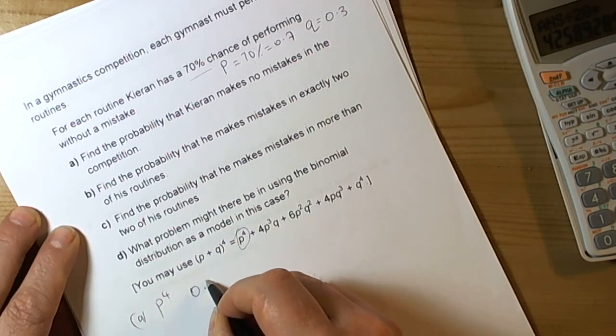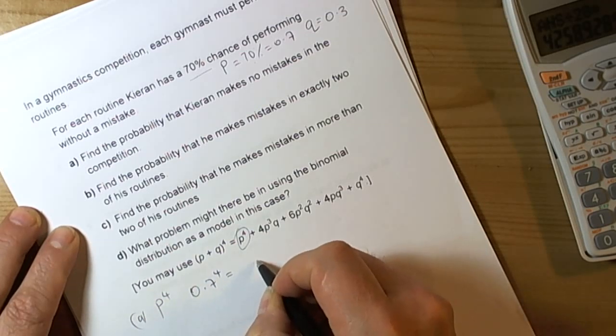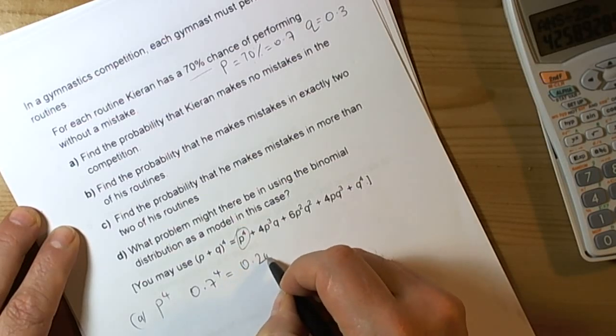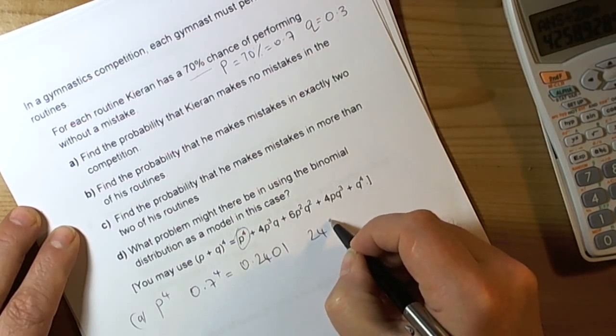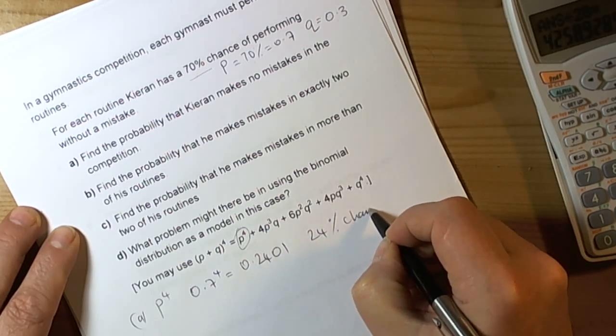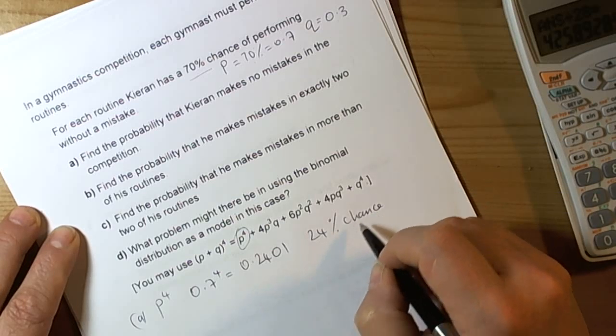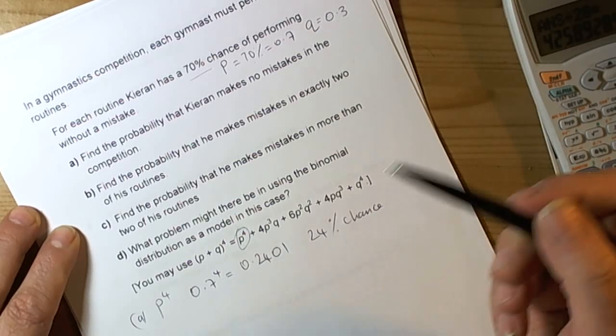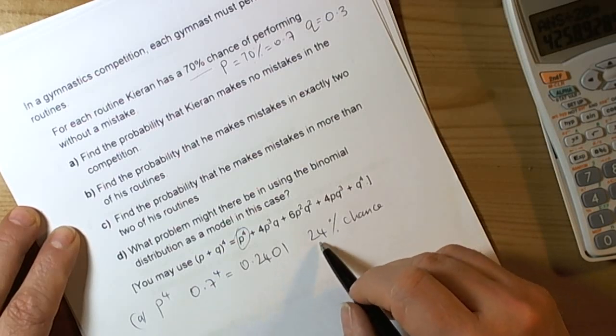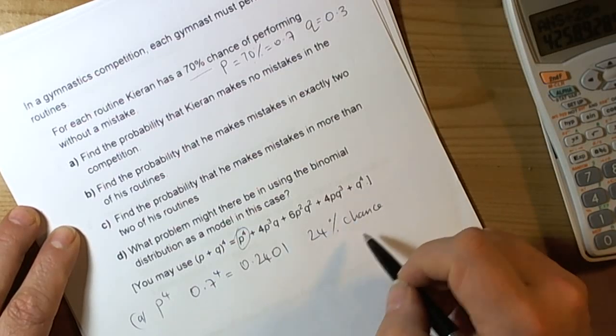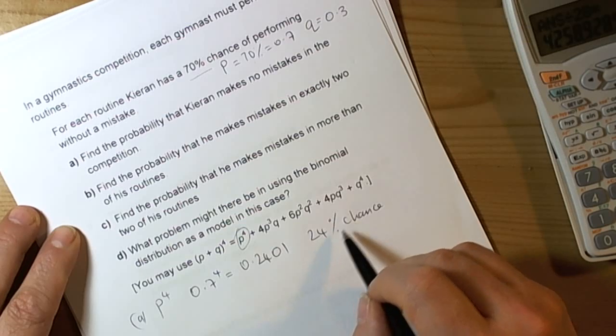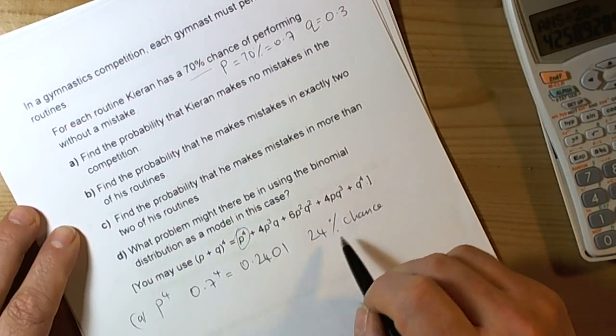So we're working out p to the power of 4. Therefore that's 0.7 to the power of 4, which gives you an answer of 0.2401. In other words, there's roughly a 24% chance that he'll go through all four routines without a mistake. So roughly one in four events. If he goes to four competitions, there's a chance in those four competitions he will have one perfect, no mistakes in all four routines.